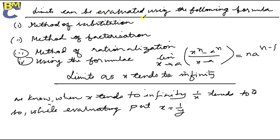Limits can be evaluated using the following methods: method of substitution, method of factorization, method of rationalization, and using the formula. The standard formula is: limit of (x^n minus a^n) divided by (x minus a) equals n times a^(n-1). There are many more formulas. We will learn all of these in later classes.